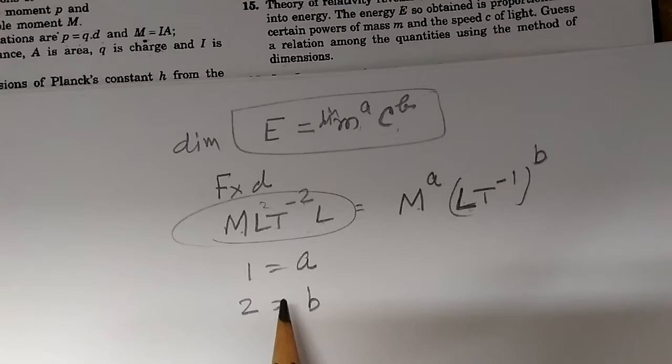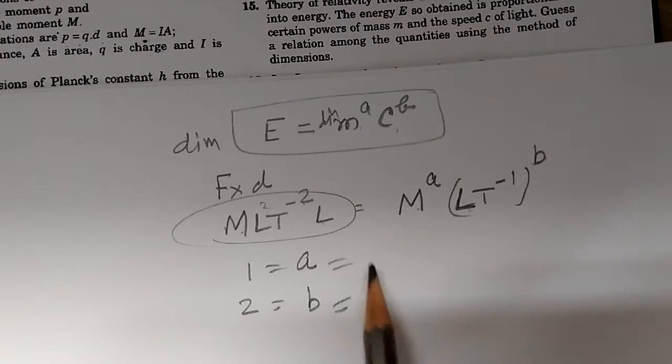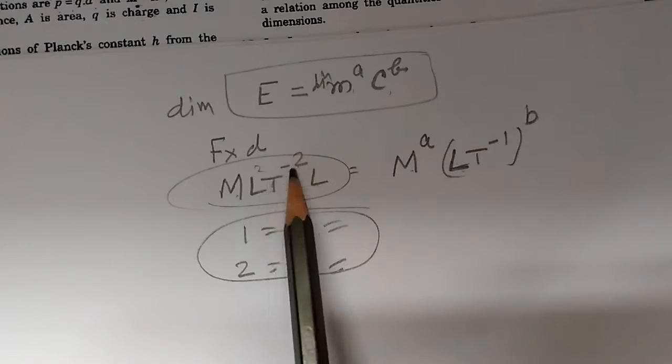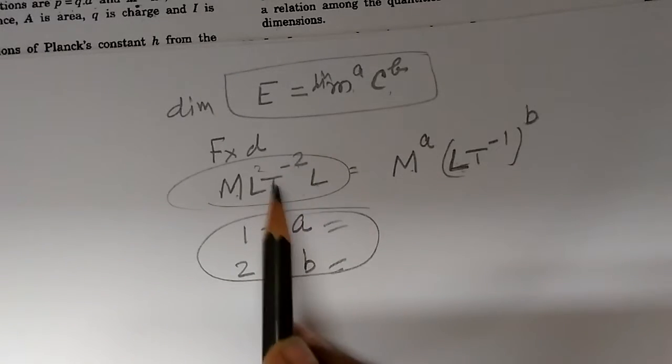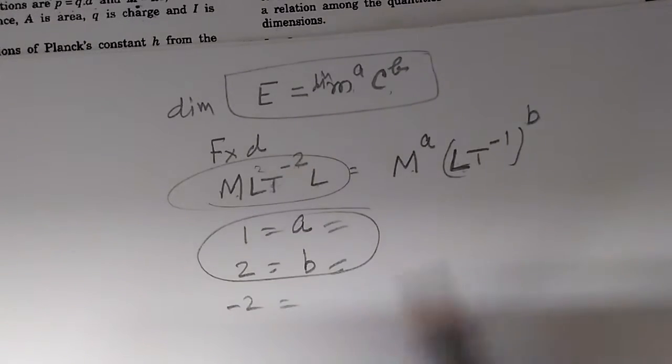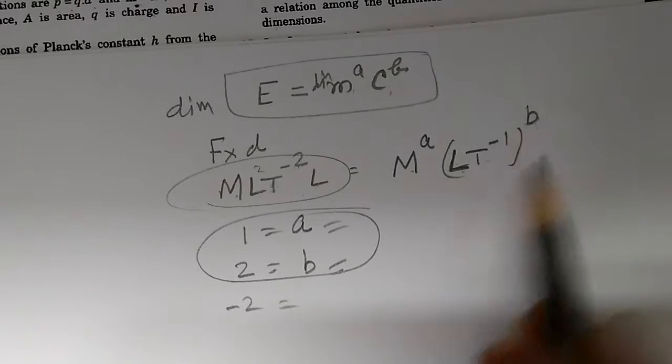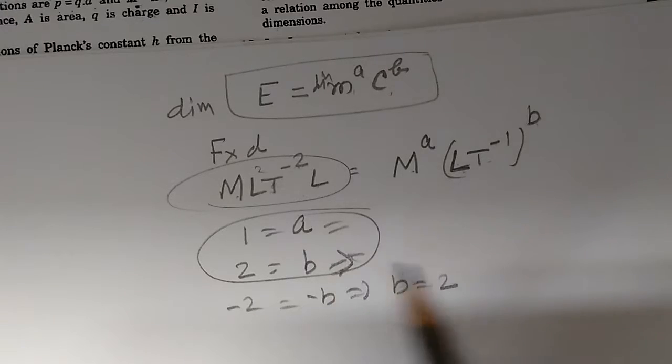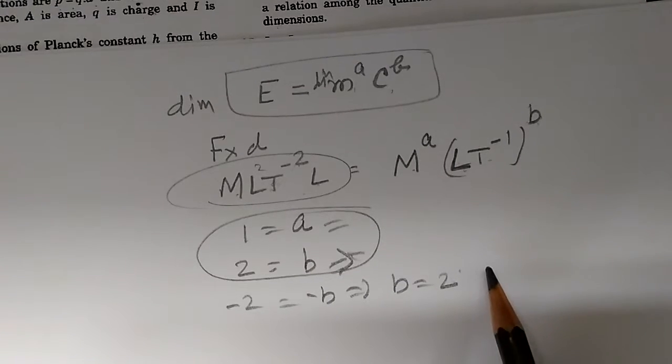And now finally for T to the power, we found the answer and the problem is finished. But let's verify it with T. T has a power of minus 2 here and T has a power of minus B here. This also gives B equals 2, confirming that B equals 2 was correct.